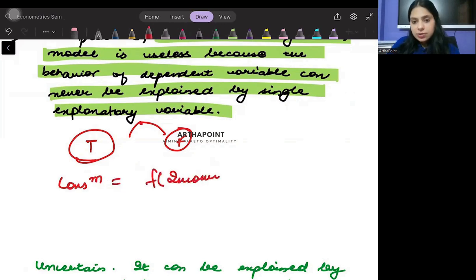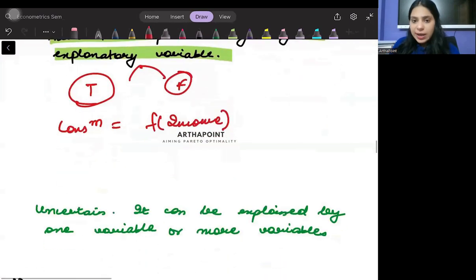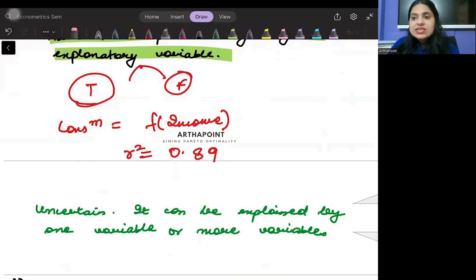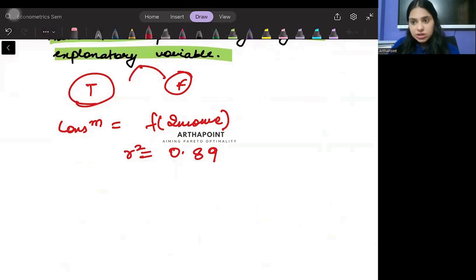Now in this case, what happens is even though my R square may come approximately say 0.89, then what would this mean? It would mean that there is 89 percent of variation in consumption that can be explained due to income. So if R square comes out to be 0.89, I am saying 89 percent of variation in consumption can be explained due to variation in income.